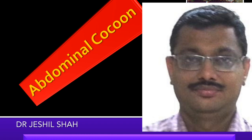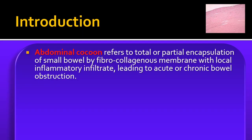Today we will be discussing a special condition in the abdomen which is known as abdominal cocoon. It is total or partial encapsulation of the small bowel by fibroconductive membrane with local inflammatory infiltrates leading to acute or chronic bowel obstruction.